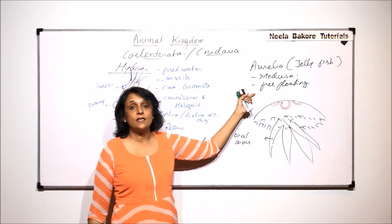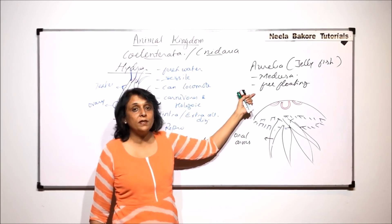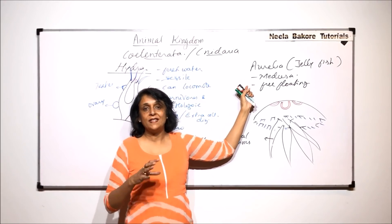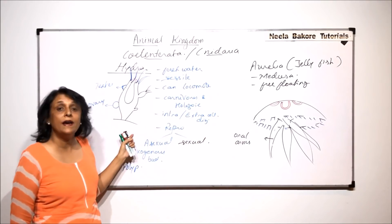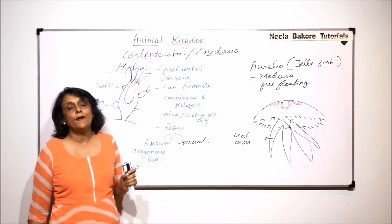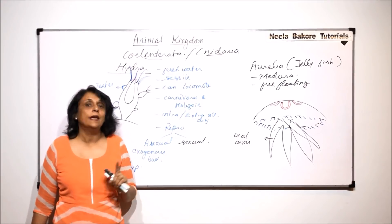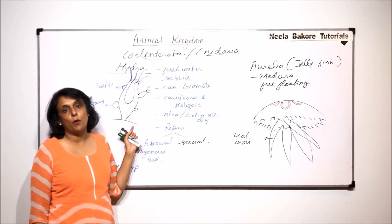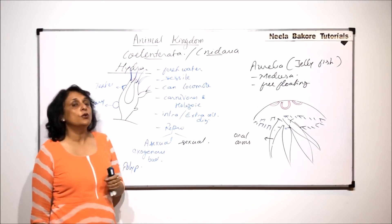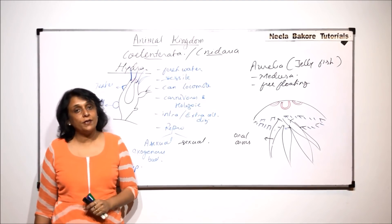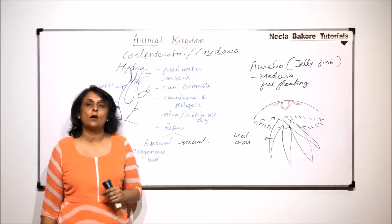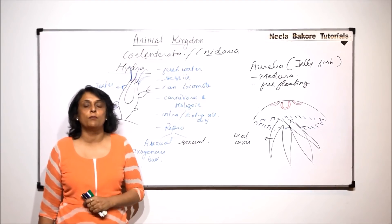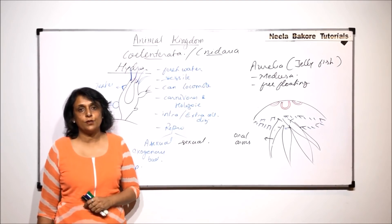Medusa is the predominant phase in Aurelia, whereas in Hydra we find only the polyp form. These are two important examples. In the next video, we will talk about a few more important examples.